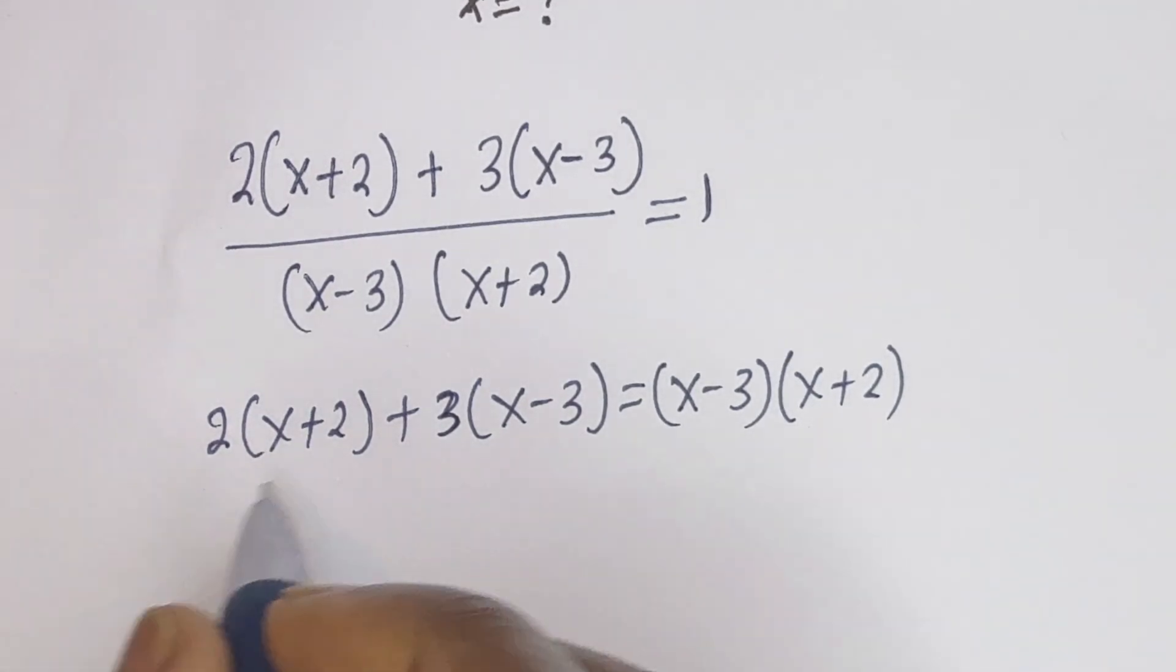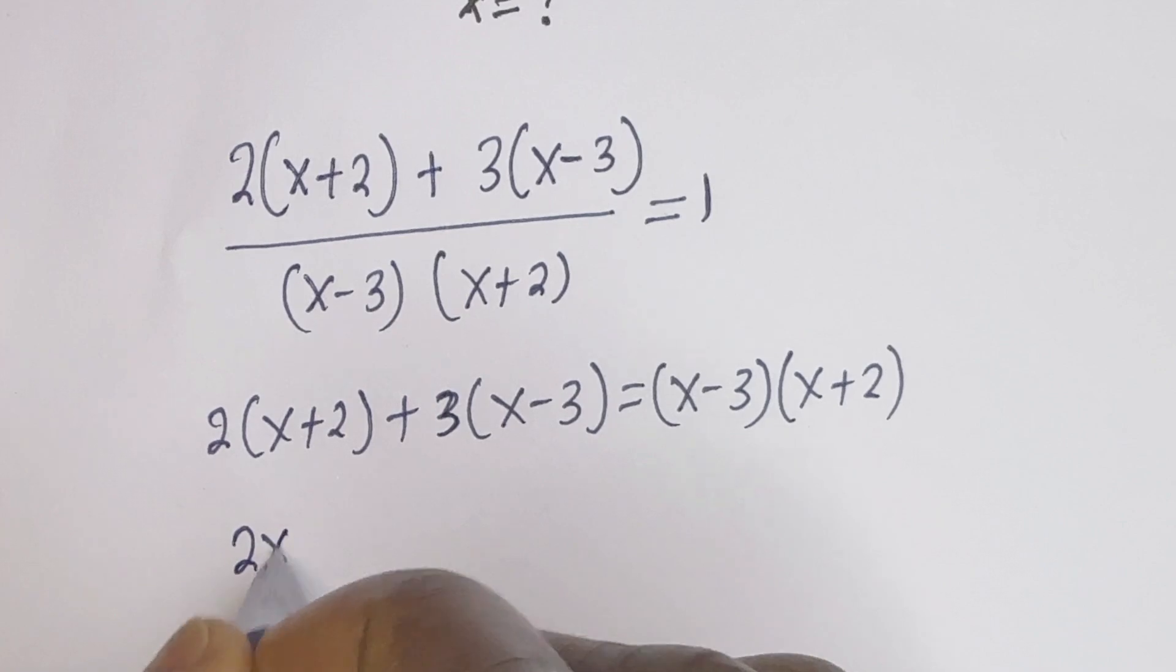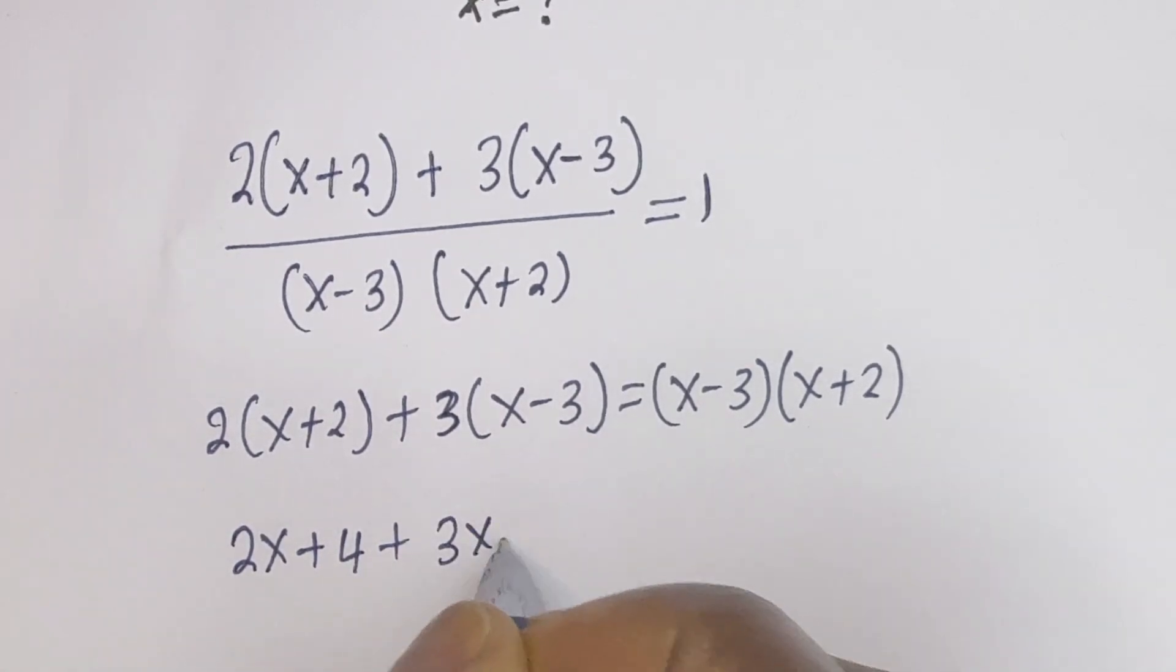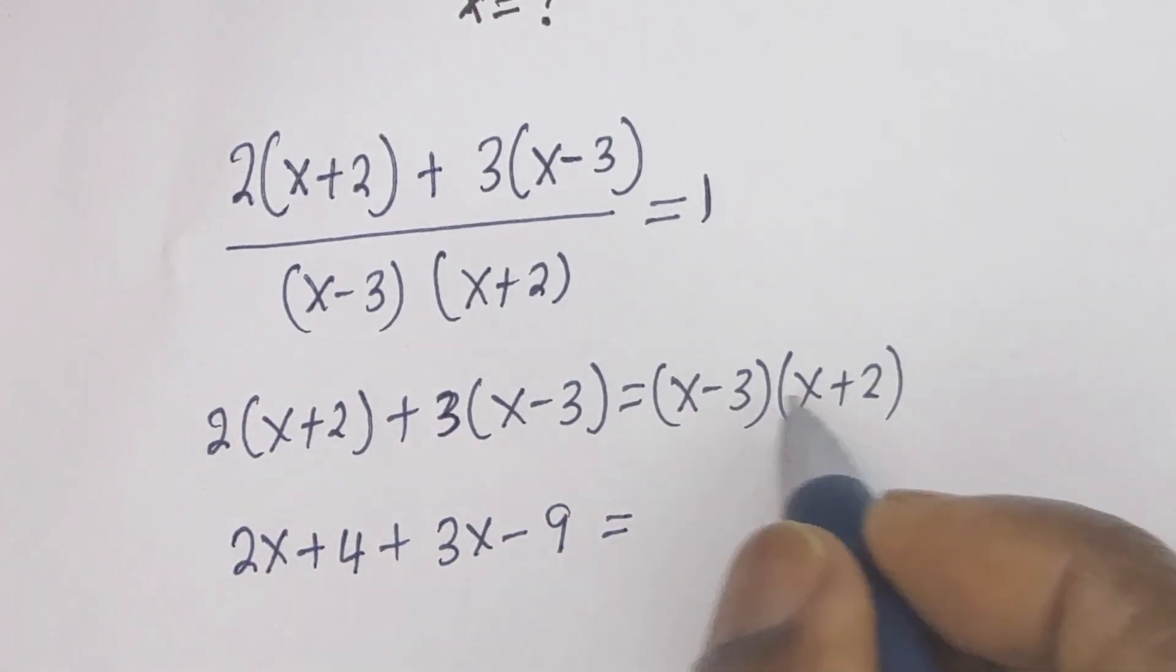Now, let's open the bracket. We have 2 times x, this is 2x plus 2 times 2 is equal to 4, plus 3 times x minus 3 times 3. If you open this bracket,